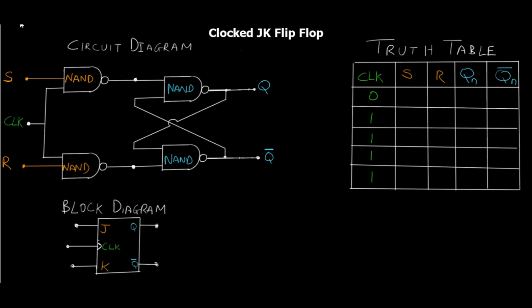JK flip-flop is a modified version of SR flip-flop and it helps us in eliminating the race condition which happens in the SR flip-flop. As you can see on the screen, this is currently an SR flip-flop. What we're going to do is convert it into a JK flip-flop. We take the output from Q and connect it all the way to R, and we take the output from Q-bar and connect it all the way to S as a third input.